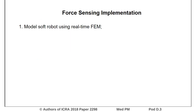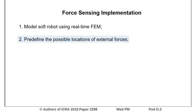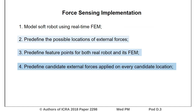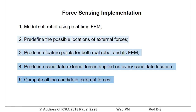The first step is to model soft robots in a real-time simulator. Then, pre-define the possible locations and feature points for both systems. Pre-define candidate forces on every location. After that, compute all the candidate forces. The last step is to filter smaller values and the remaining correspond to the external forces.